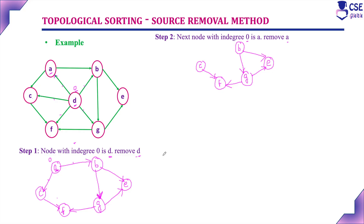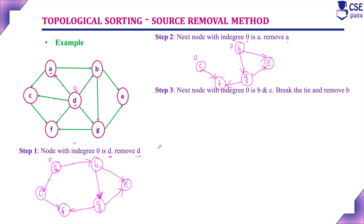Next step: find the next node with in-degree 0. Both node B and node C have in-degree 0. When more than one vertex has in-degree 0, we break the tie arbitrarily — that is, in alphabetical order, whichever vertex comes first is removed first. So remove B first. After removing B and its two edges, the resultant graph will contain C, F, G, and E.